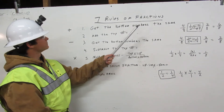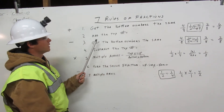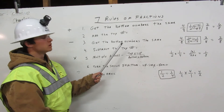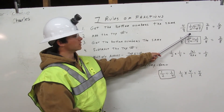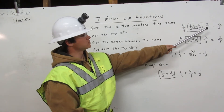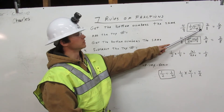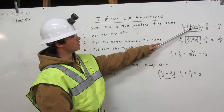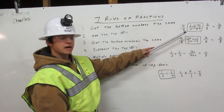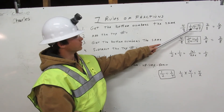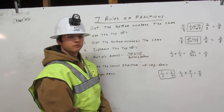Seven rules of fractions. To add, there are two rules: get the bottom numbers the same and add the top numbers. Here's an example: one half plus one quarter. Two times one equals two, two times four equals eight. Then we go the other way: four times one equals four, and four times two equals eight. Now we will add the top numbers: four plus two equals six, and we will carry the eight. That is how you add fractions.